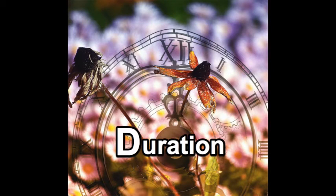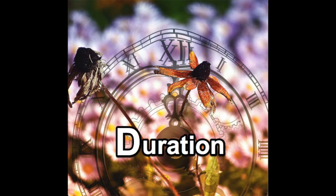Some psychologists suggest that there should be a fifth D, standing for duration — in other words, the length of time the symptoms have been present. Where people may exhibit problematic behaviors for only a short period of time, they may not need to be treated, whereas others with long-term abnormal behaviors might require intervention.